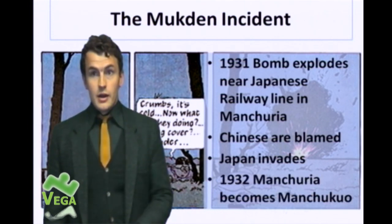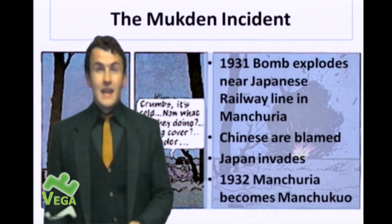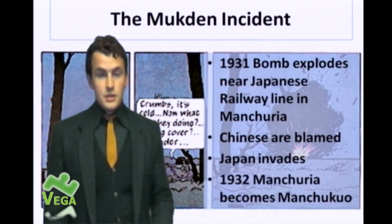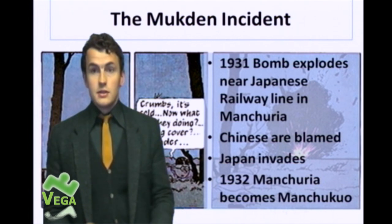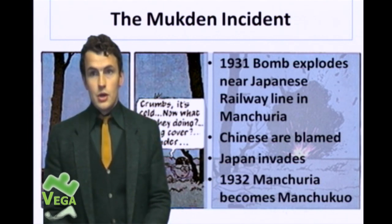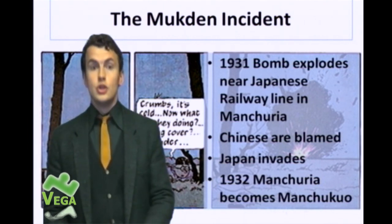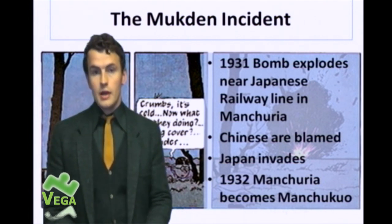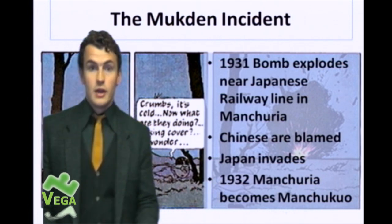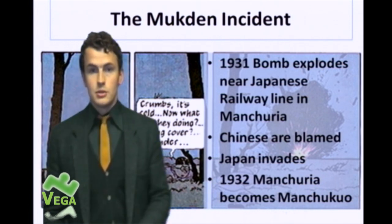They invaded Manchuria, and in 1932 their invasion was successful. Manchuria became Manchukuo — the new name for Manchuria — and it now belonged to Japan.